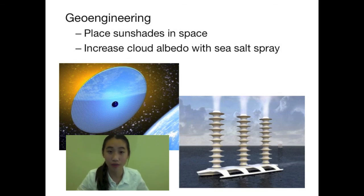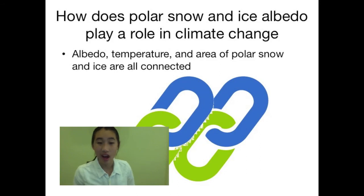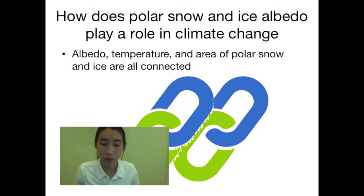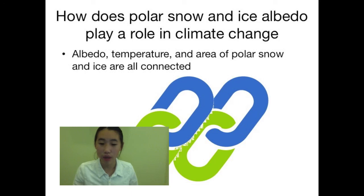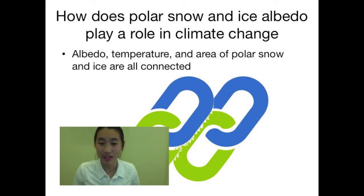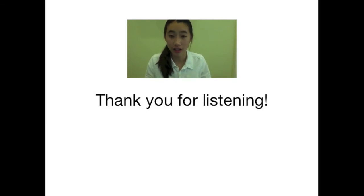As previously discussed, a decrease in sea ice thickness and surface area caused a decrease in albedo, showing that the polar caps play a huge role in climate change. The albedo of polar snow and ice, the area and thickness, and the temperature are all connected and affect each other. For example, if the thickness of the ice decreases, the albedo decreases, meaning more heat is absorbed and less reflected, which in turn increases temperature. And that concludes my report on global climate change dealing with decline in albedo. I hope this information was sufficient for the research team to help them further their research. Thank you for listening.